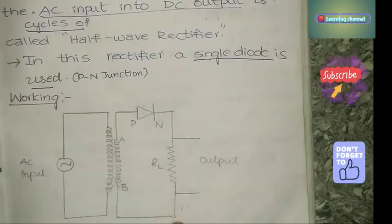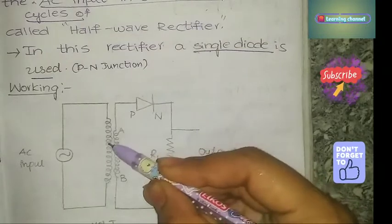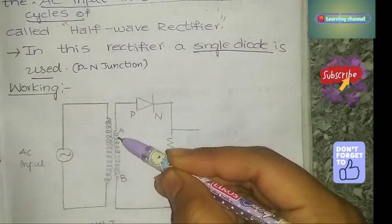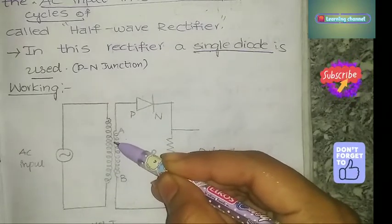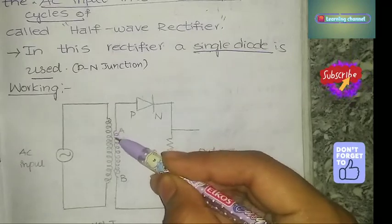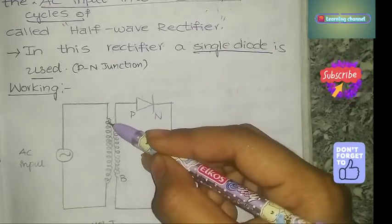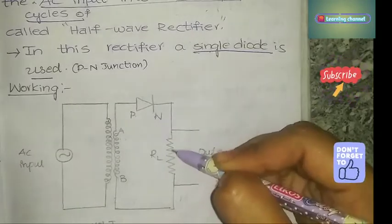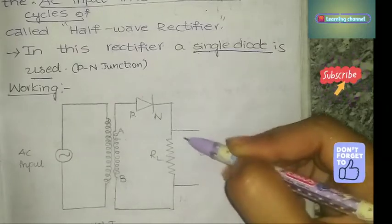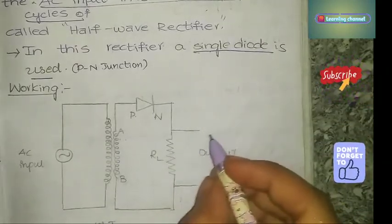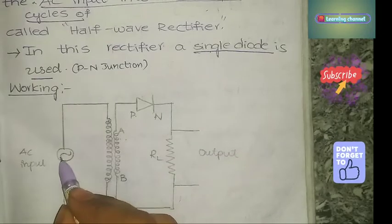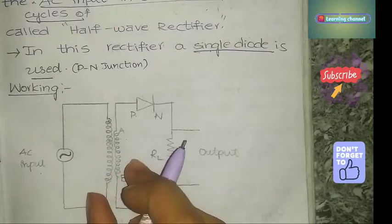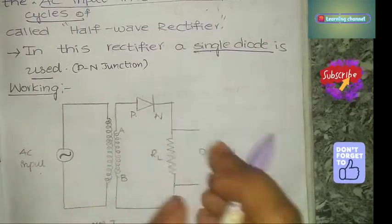Next, the circuit diagram. The circuit consists of a step-down transformer, one PN junction diode, and a load resistor RL through which the output is taken. This is the AC input, this is the step-down transformer, this is the PN junction diode, and this is the output across the load resistance.